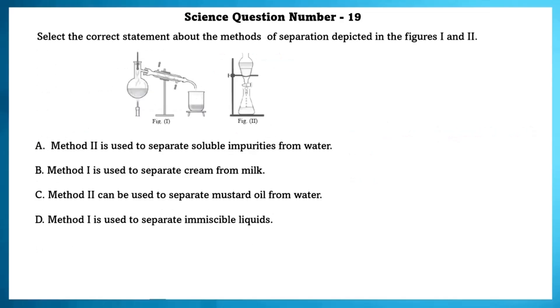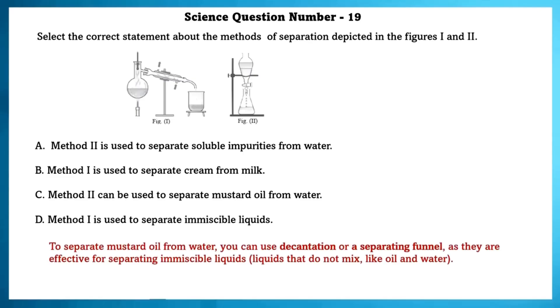Science question number 19. Select the correct statement about the methods of separation depicted in the figure 1 and figure 2. To separate mustard oil from water, you can use decantation or a separating funnel as they are effective for separating immiscible liquids. Liquids that do not mix like oil and water. So, method 2 can be used to separate mustard oil from water.